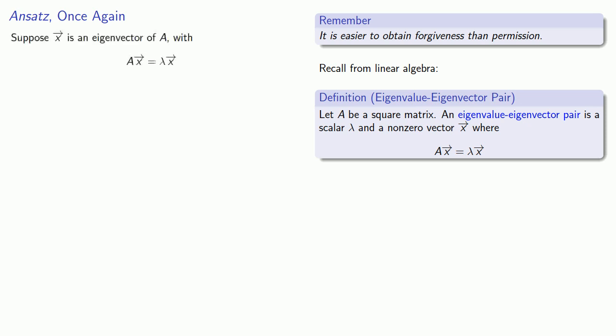Suppose x is an eigenvector of A, where ax equals lambda x. Then dx will also equal lambda x. But if xi is a component of our vector x, then we must have dx i must be lambda x i.